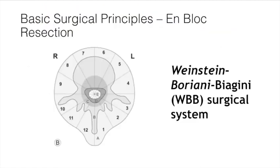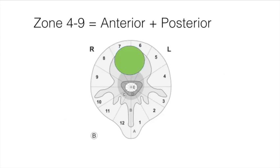Here is a brief overview of surgical resection techniques — advanced content not required for boards, but a useful framework. The WBB (Weinstein-Boriani-Biagini) classification divides the vertebra in the axial plane into 12 zones like a clock face. If the tumor is in zones 4 through 9, involving just the vertebral body, a two-stage posterior-then-anterior approach is used: the posterior elements are removed and instrumented, followed by thoracotomy and anterior vertebral body resection.